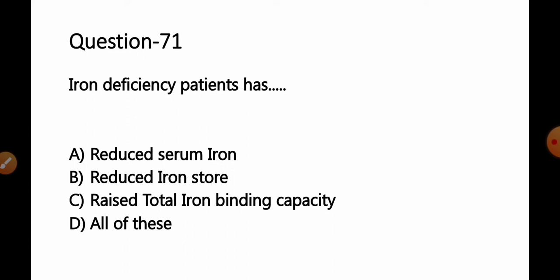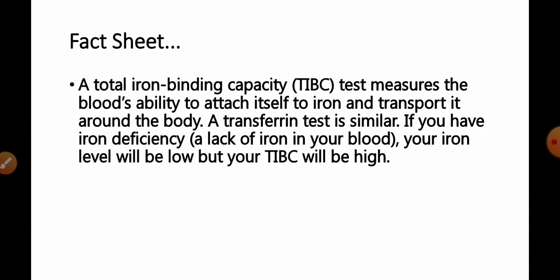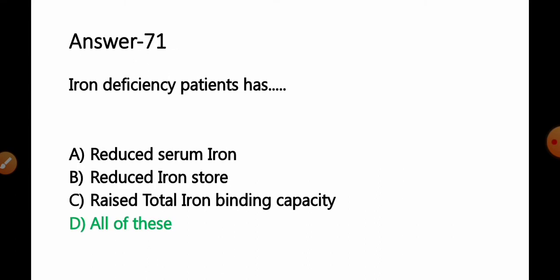Question number 71: An iron deficiency patient has — Option A: reduced serum iron; B: reduced iron store; C: raised or increased total iron binding capacity; D: all of these. Total iron binding capacity (TIBC) measures the blood's ability to attach to iron and transport it around the body. If you have iron deficiency, your iron level will be low but your total iron binding capacity will be high. So both serum iron and iron stores are reduced, but TIBC is raised — Option D, all of these, is correct.